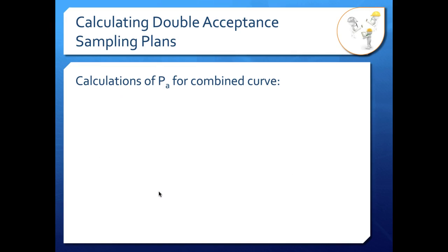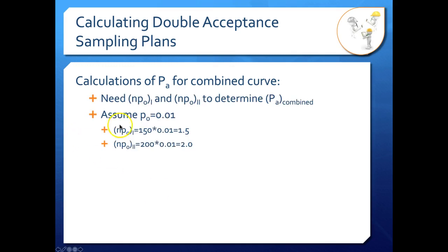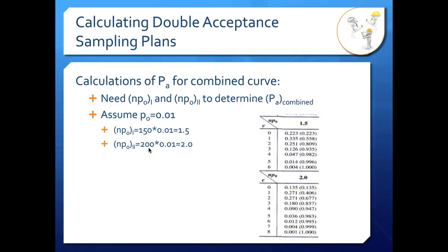Plugging in numbers for our combined curve, we first need NP01 and NP02. Let's pick P0 = 1% or 0.01 fraction non-conforming in our population. Our sample sizes were different — 150 for the first sample and 200 for the second — so our NP0 values are different: 1.5 for sample one and 2.0 for sample two. When looking up values in the Poisson table, make sure you're using the correct NP0 for each sample.